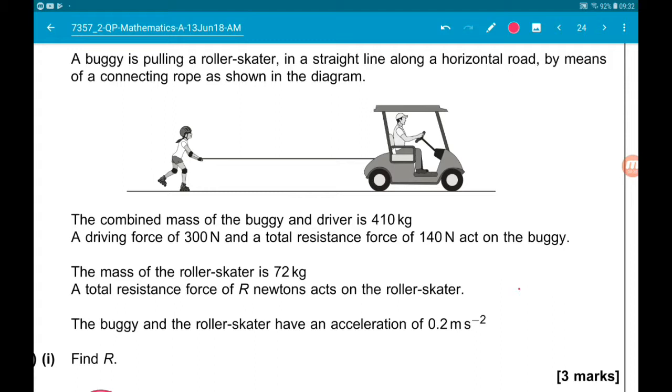of the buggy and the driver is 410 kilograms. A driving force of 300 newtons and a total resistance force of 140 newtons acts on the buggy. The mass of the roller skater is 72 kilograms. A total resistance force of R newtons acts on the roller skater.